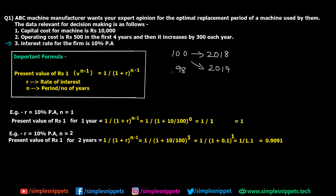In this example we are going to consider that money value changes over time, so we need to find the present value of 1 rupee for every year. Before we get to the formula, let's read the question. ABC machine manufacturer wants expert opinion on the optimal replacement period. Capital cost is 10,000 rupees, operating cost is 500 rupees for the first four years then increases by 300, and the interest rate is 10% per annum.